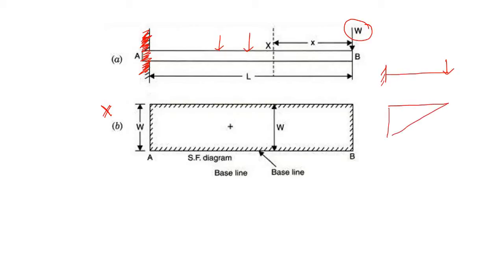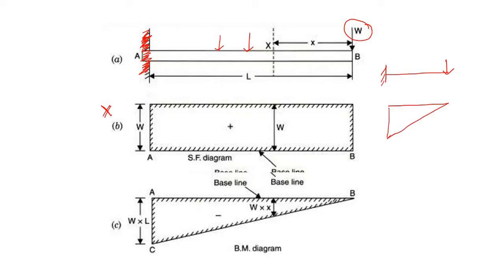For any cantilever beam, the bending moment diagram looks like this. At the free end, the bending moment is zero, and at the fixed end it is maximum. Not only that, it varies linearly.